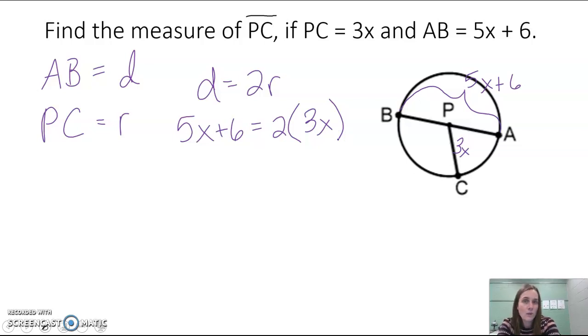So now we have an equation that we can solve. A lot of times it's easiest to simplify it first. So I'm going to take 2 times 3x to simplify that right side and get 6x.